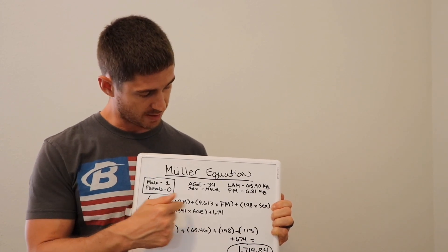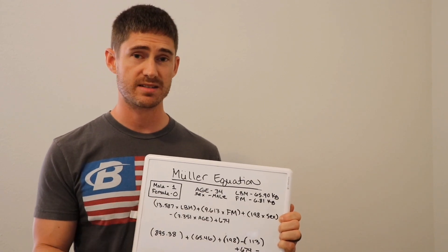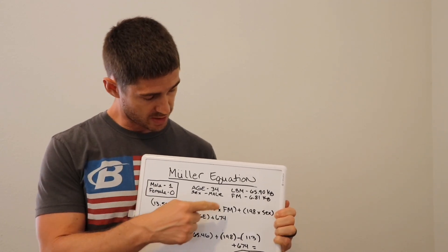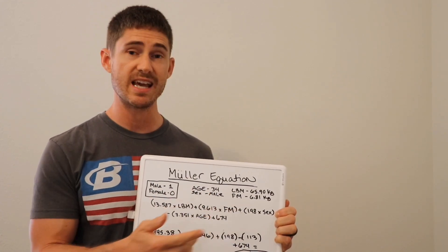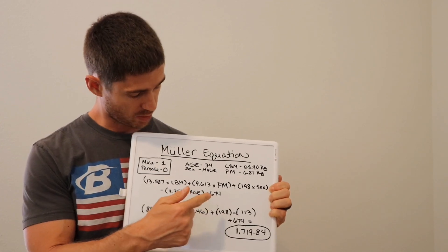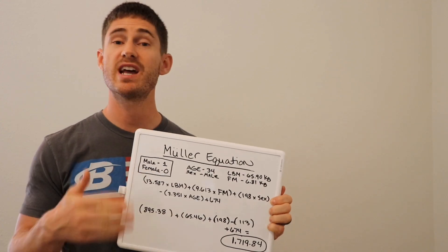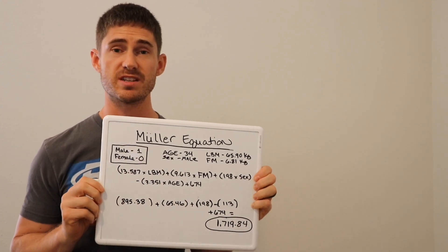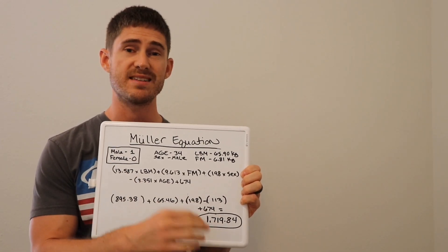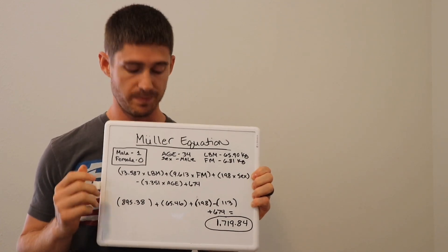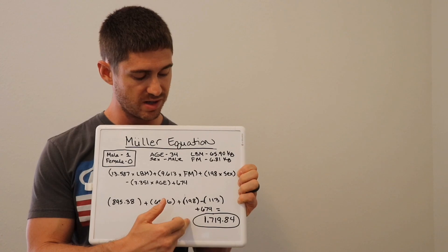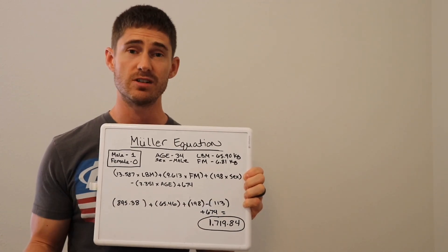Then you are going to add 198 times your sex. If you're a male, you put one; if you're a female, you put zero. So for this example — a male — it's 198 times one, which is 198. Then you subtract 3.351 times your age. This example is a 34-year-old, so that gives 113.94. Finally, no matter what, you add 674 to the equation. When you do the math — adding and subtracting all those values — this example comes to 1,719.84 calories as a BMR.